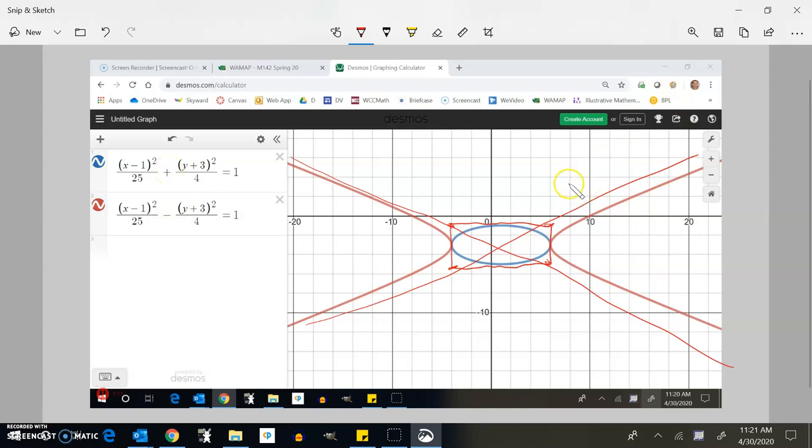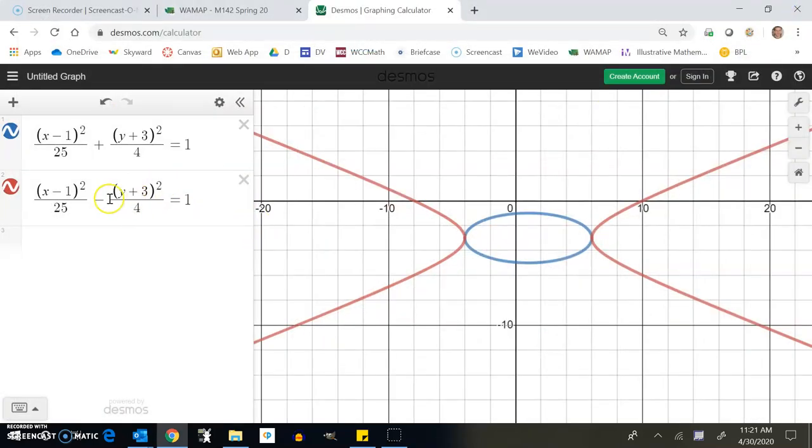So notice when I subtracted y, the y value, I made this term negative. It goes left and right. It's like x minus y. It kind of looks like an x. That's not really mathy but whatever we'll take it.